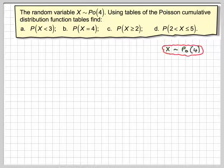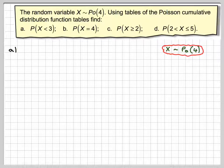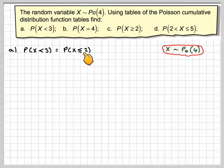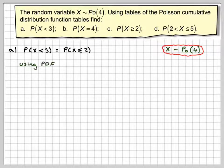For the first case, X is Poisson(4) and we want P(X < 3). We need to consider the probability that X is less than or equal to 2. Using the PDF graph, we can have a look and see what that looks like.